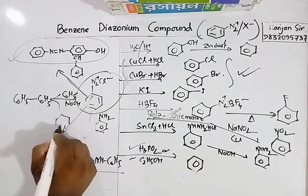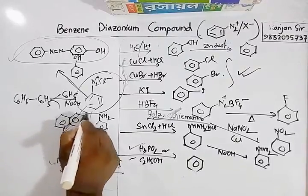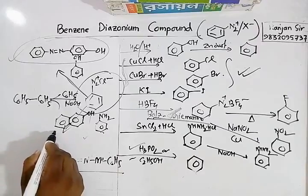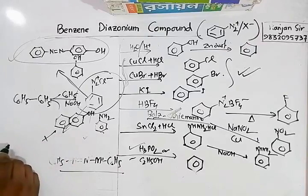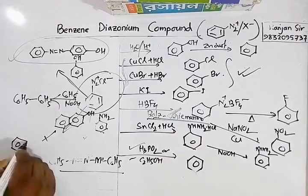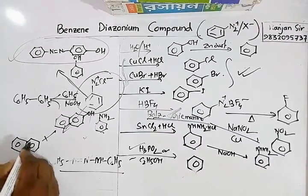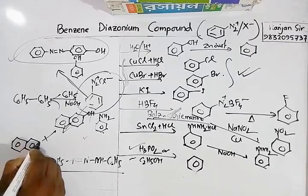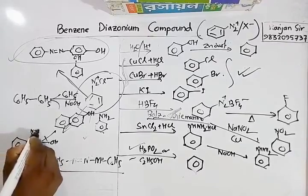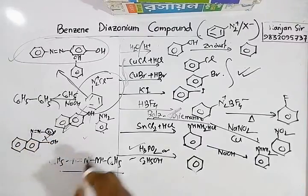Diazonium compounds can also react with beta-naphthol. The product has an azo linkage (N=N) connecting the benzene ring to the beta-naphthol ring, which has an OH group.